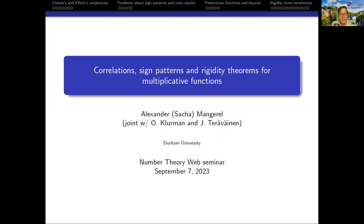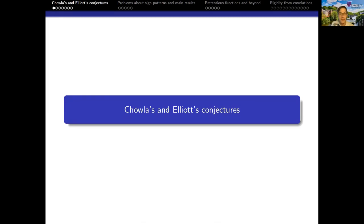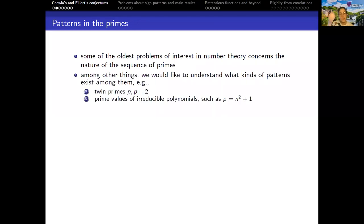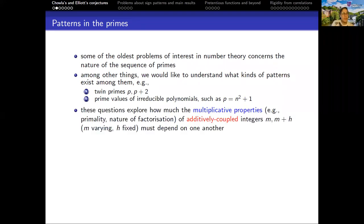Like many other analytic number theory talks, I'm going to begin by motivating things by looking at problems about the primes that we still don't know how to solve. A lot of those problems relate in some form or other with the nature of the sequence of primes. In particular, we'd like to know what kinds of patterns exist among them. For example, can we find infinitely many twin primes? Can we find infinitely many primes given by values of irreducible polynomials like x squared plus 1? A lot of these questions explore the extent to which the multiplicative properties — for example, primality or the number of prime factors of additively coupled integers, say m and m plus h — must depend on one another or if they can be independent.